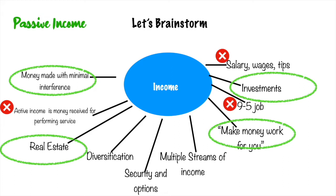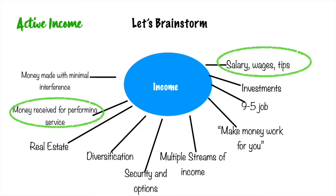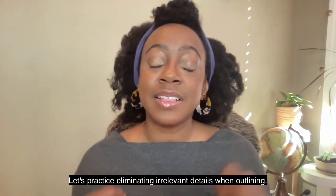Now let's say our paragraph was about active income. Which details could we use? Money received for performing services, salary, tips and wages, and nine-to-five job. And which details are irrelevant that we can eliminate? Money made with minimal interference, investments, and making money work for you.